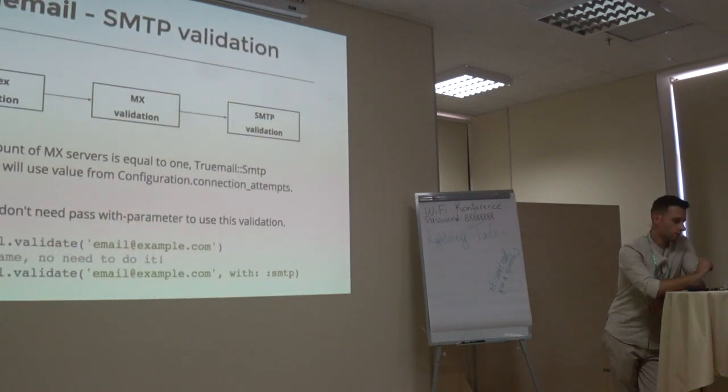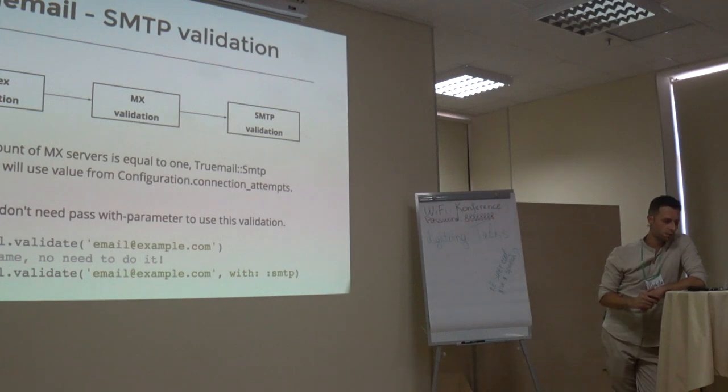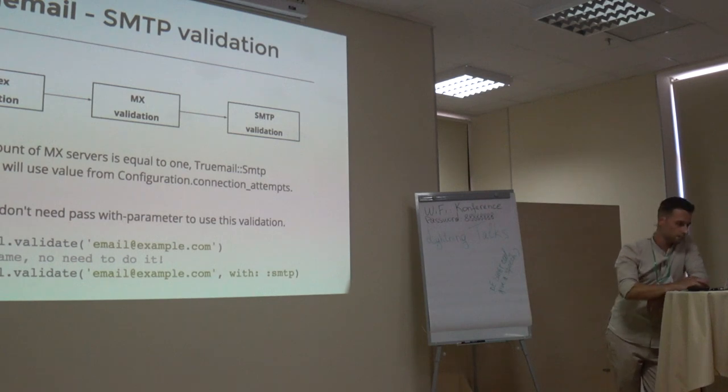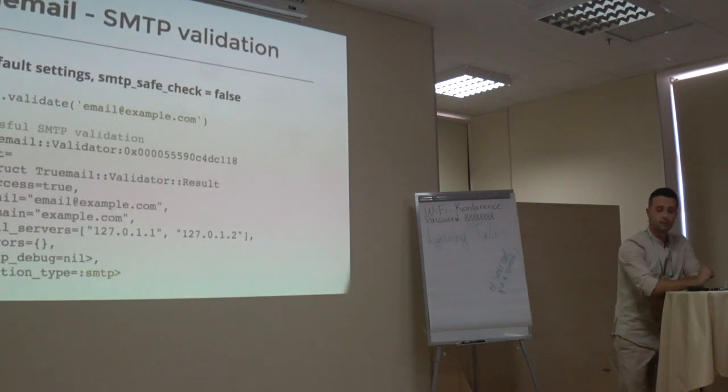And SMTP validation. It is the final third validation level. This type of validation tries to check real existence of email account on current email server. If total count of MX servers is equal to 1, Truemail SMTP validator will use value from configuration connection attempts. Also you don't need to pass validation parameter to use this validation. Validation will be performed step by step. Regex validation, MX and then final SMTP.